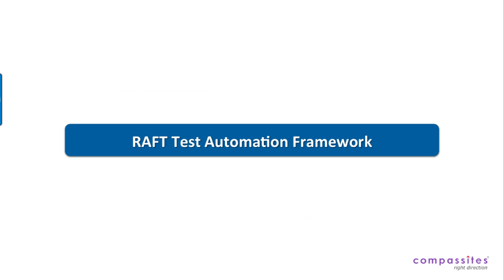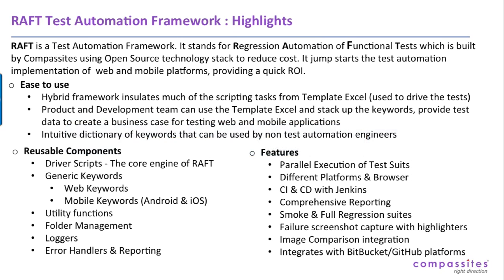Now that you have seen the capabilities we offer at Composites, let's take a deep dive into RAFT test automation. RAFT stands for Regression Automation of Functional Tests. It is a hybrid framework built by Composites using an open source stack, mainly designed to reduce cost and quickly start any test automation — be it web, Android, or iOS — providing a very quick ROI.